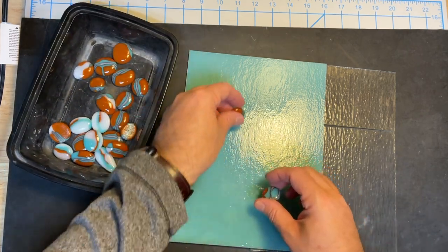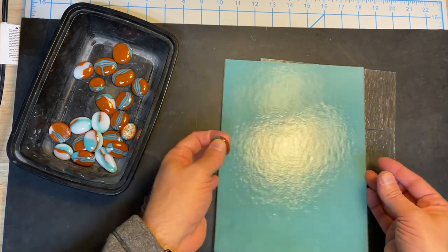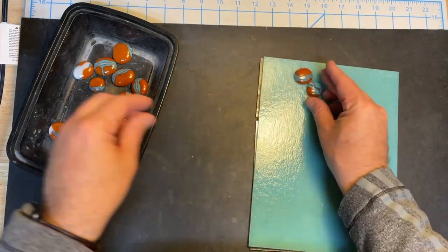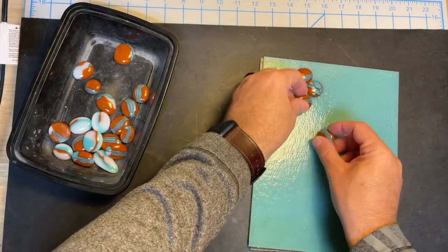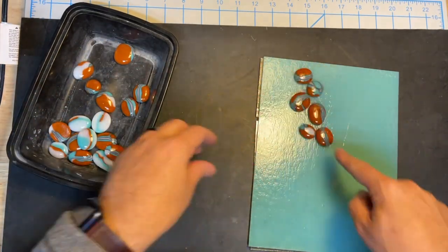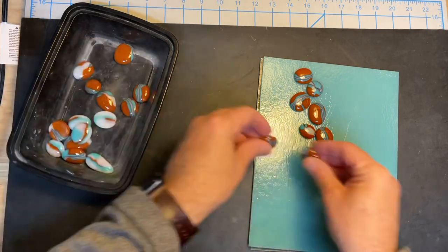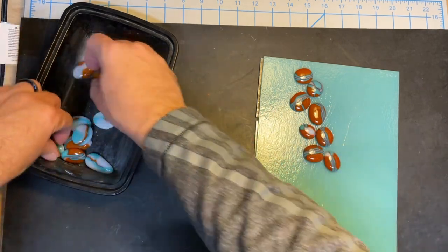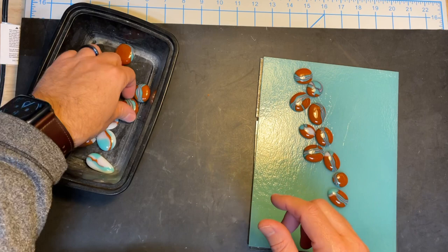I've got some Tecta and then robin's egg blue, and I'm just going to arrange these in a pattern that I like, kind of down the middle. I think I'm going to go from one corner to the next and do a full fuse on these.